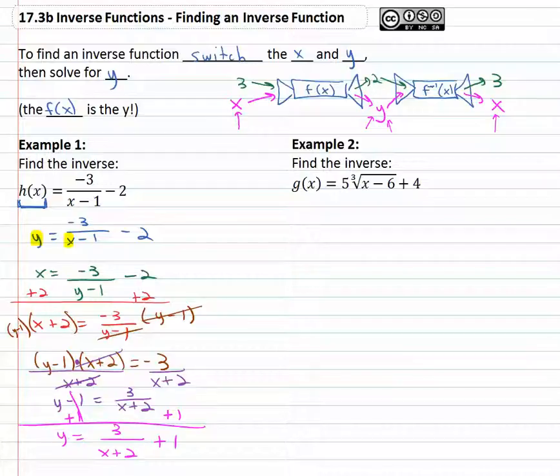Now, since this is technically the inverse, instead of saying y equals, we're going to use the notation f inverse of x equals, because this is the inverse. Oops, not f inverse, this is h inverse, it's the inverse of h. And so by using this notation, we've declared that we have found the inverse of h, negative three over x plus two plus one.